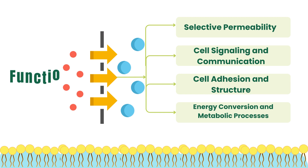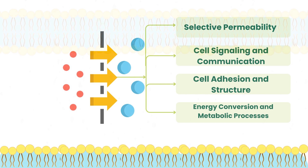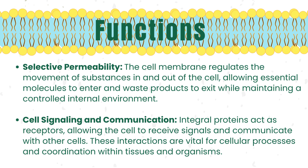There are several functions of the cell membrane. One of the critical functions is its role in selective permeability — it acts as a regulator, controlling the movement of substances into and out of the cell. Essential molecules necessary for the cell's processes are permitted to enter, while waste products are allowed to exit, all while maintaining a carefully controlled internal environment. Another vital function is cell signaling and communication: integral proteins embedded within the membrane act as receptors, facilitating the cell's ability to receive signals and communicate effectively with other cells.